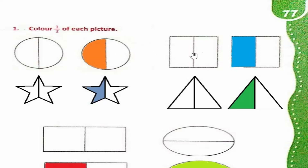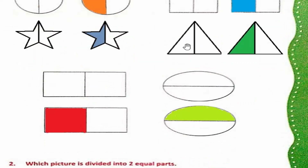Is figure mein bhi total parts two hain. So hum ek part ko shade karenge — so one by two of the picture is shaded. Same way, hum half picture ko shade karenge. So one part of two is shaded — so one by two of the picture is shaded. Is picture ke bhi two parts hain aur hamein one by two shade karna hai. So hum ek part ko shade karenge. So one by two is shaded. Same way in this picture, one by two of the total picture is shaded. Total parts: one, two. Shaded part: one. So one by two.